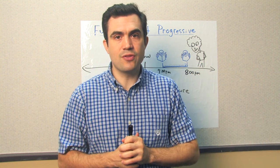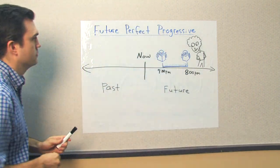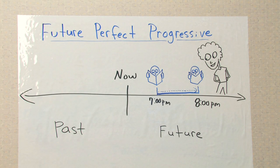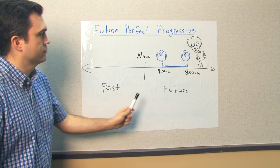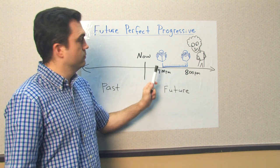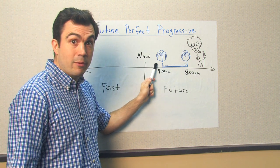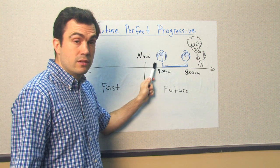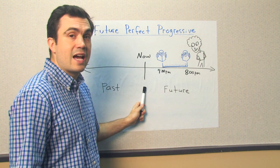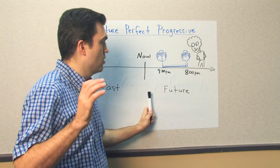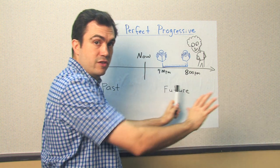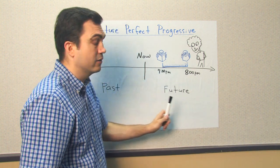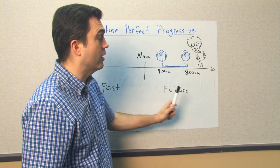So let's take a look at the board. This is Jeremy. This is now. This is the past. All of this is the future — everything here is the future and future perfect.